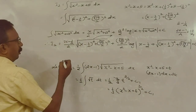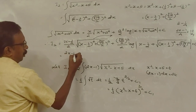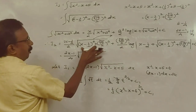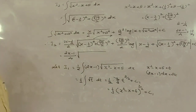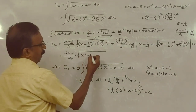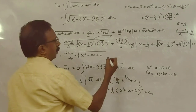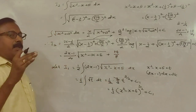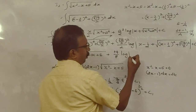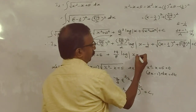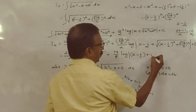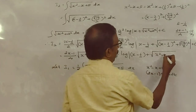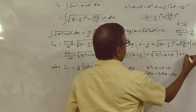Applying the formula: I2 = (2x - 1)/4 into root of (x² - x + 5) plus 19/8 · log|x - 1/2 + root(x² - x + 5)| + C2.